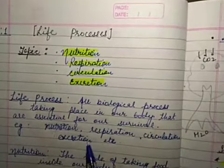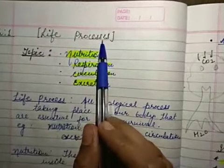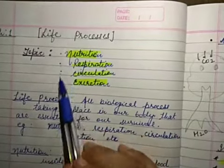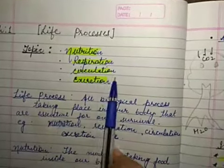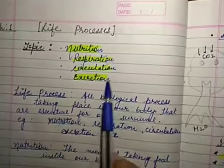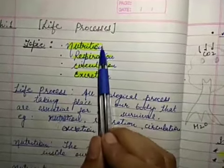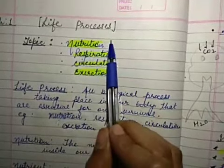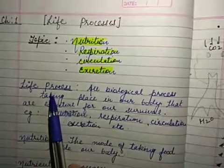Hello everyone, today we are going to study the first chapter of biology and the chapter name is life processes. The topics that we have to cover in this chapter are nutrition, respiration, circulation, and excretion. So first of all we will start with the first topic that is nutrition. In this topic we have to study nutrition in plants as well as nutrition in animals. Let's start the topic.